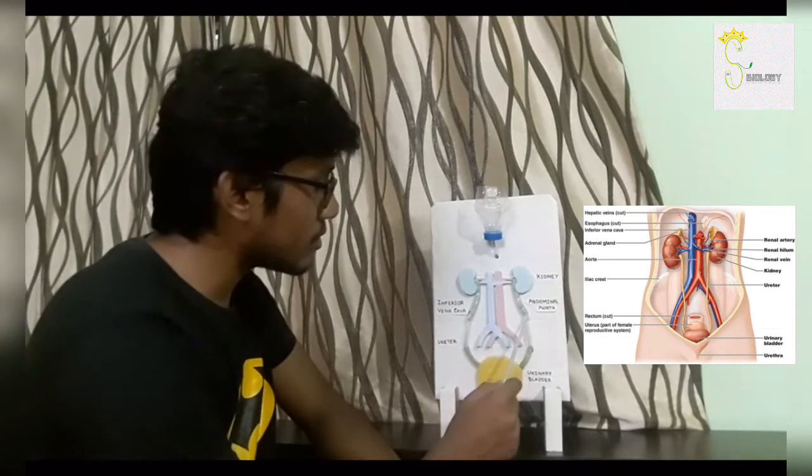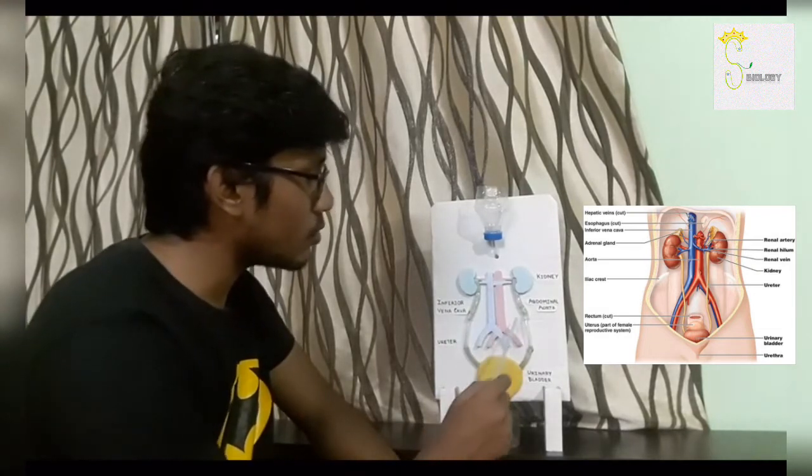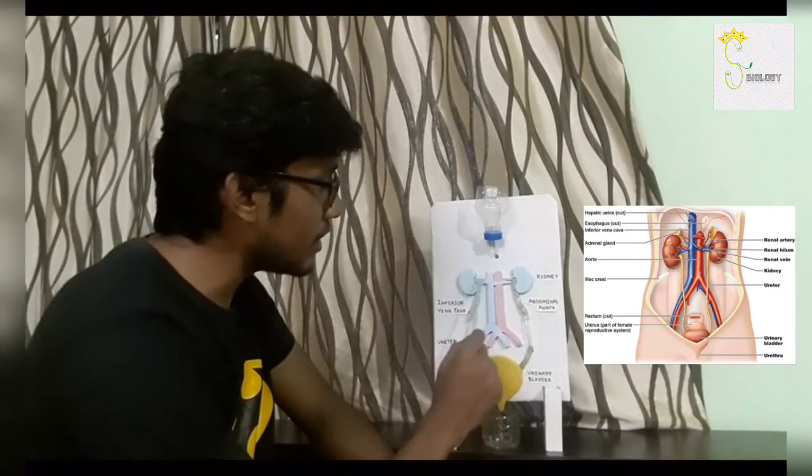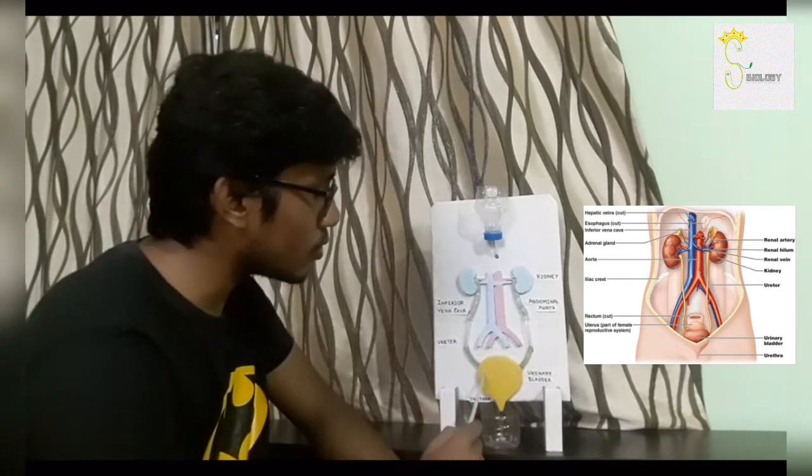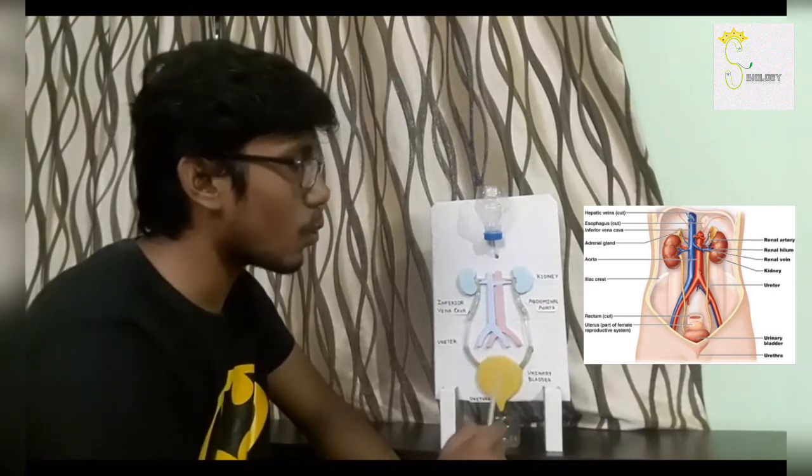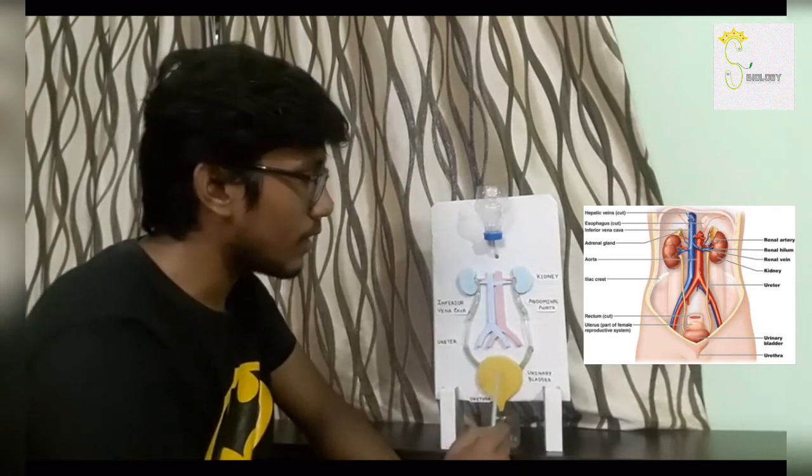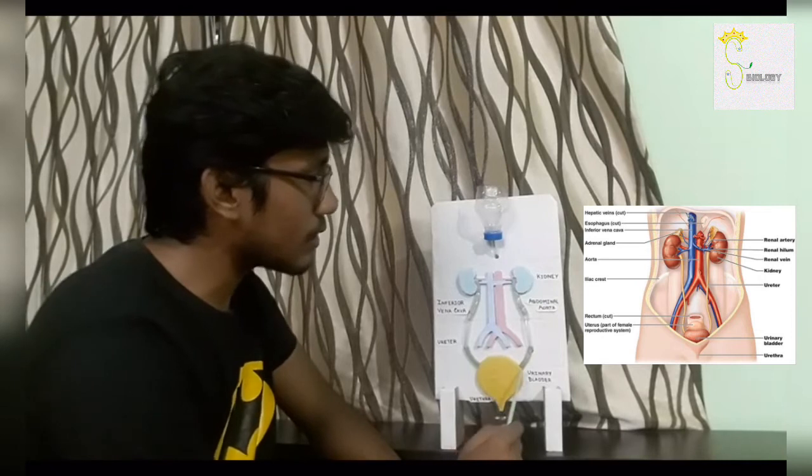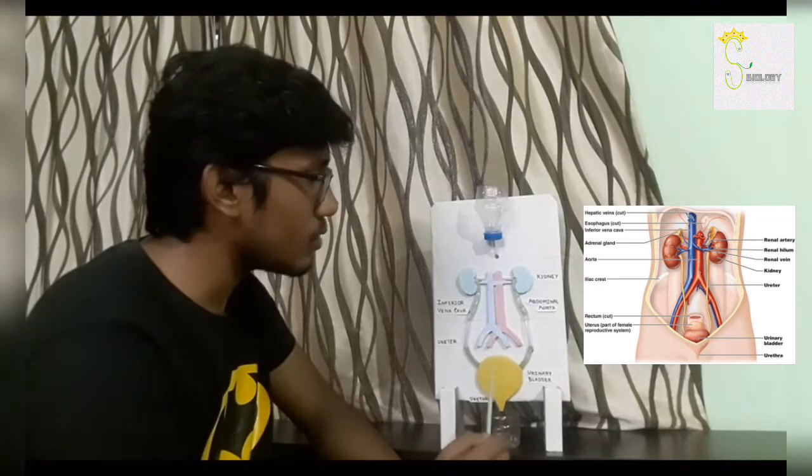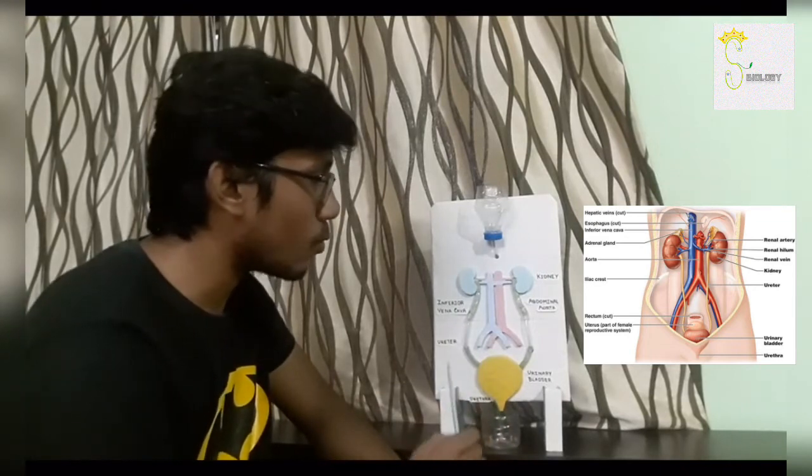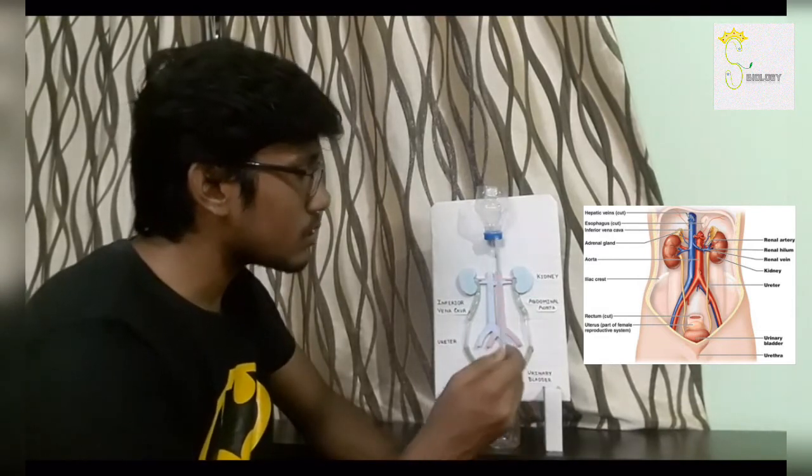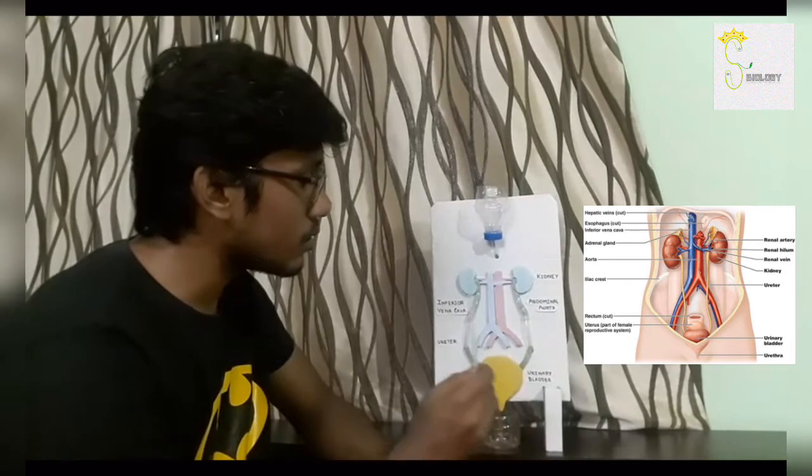This is the ureter. Ureter is a muscular tube that transports urine from each kidney to the urinary bladder. Urinary bladder is a sac-like structure that collects and holds urine that comes from the ureter. This is urethra. Urethra is a narrow passageway where urine passes from the bladder to outside of the body called urination.